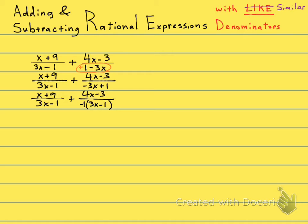And now when I look at my denominators, they almost look the same. But I have this negative 1 right here, which I'm going to get rid of.